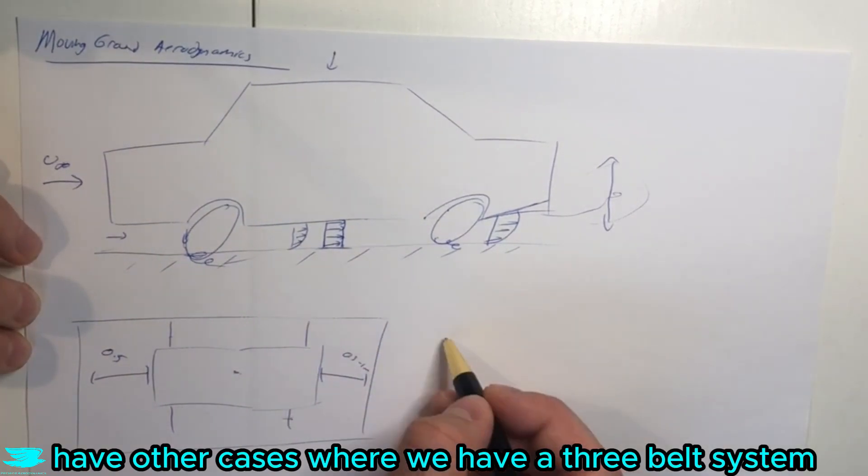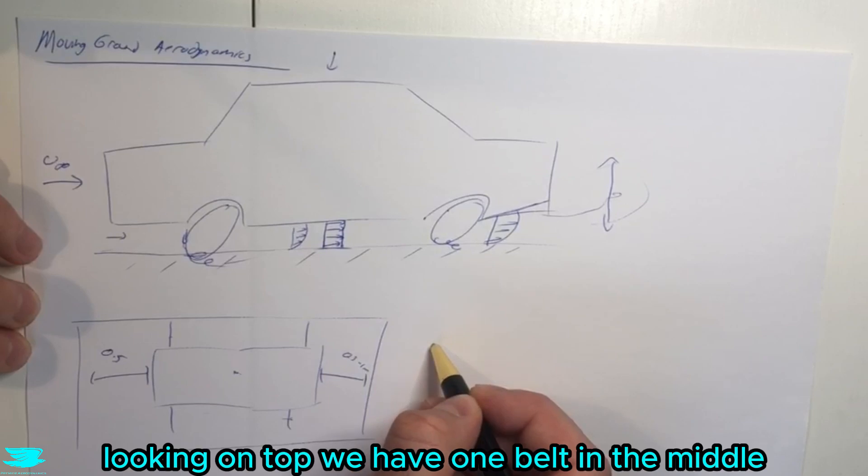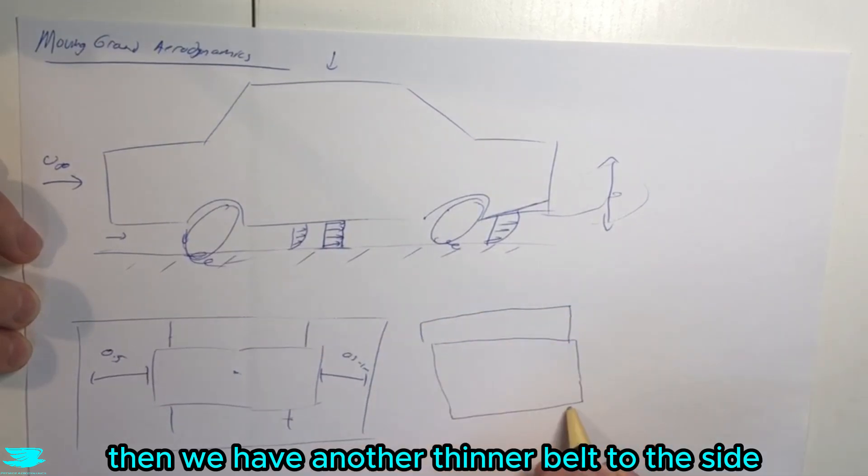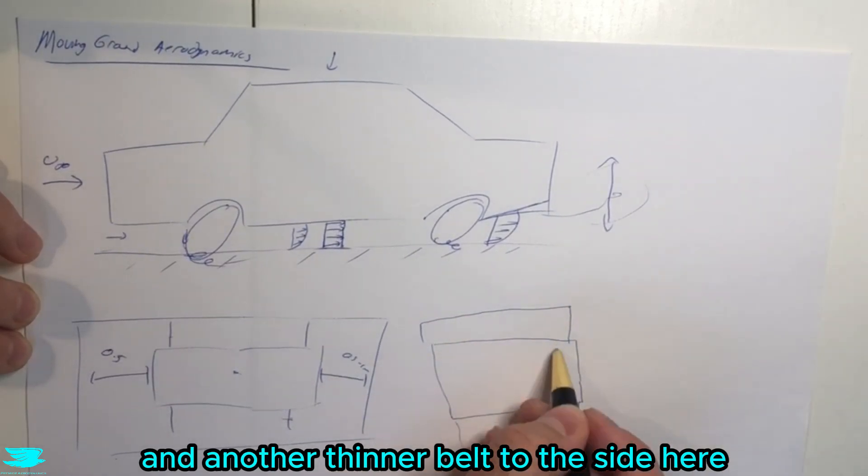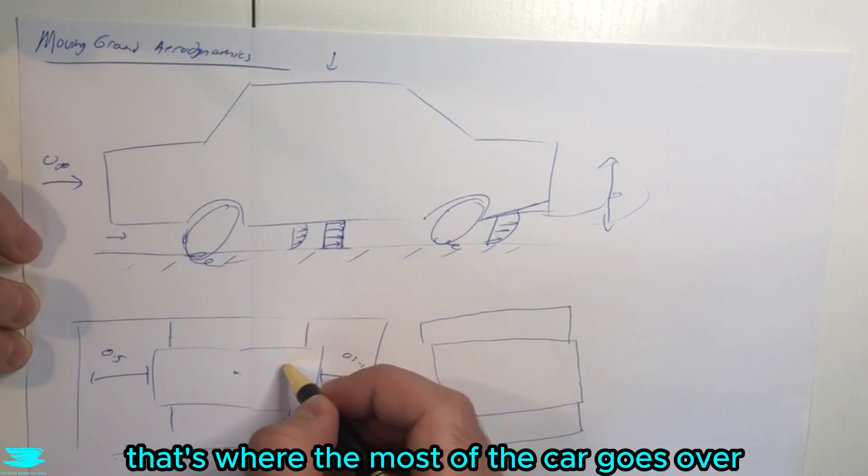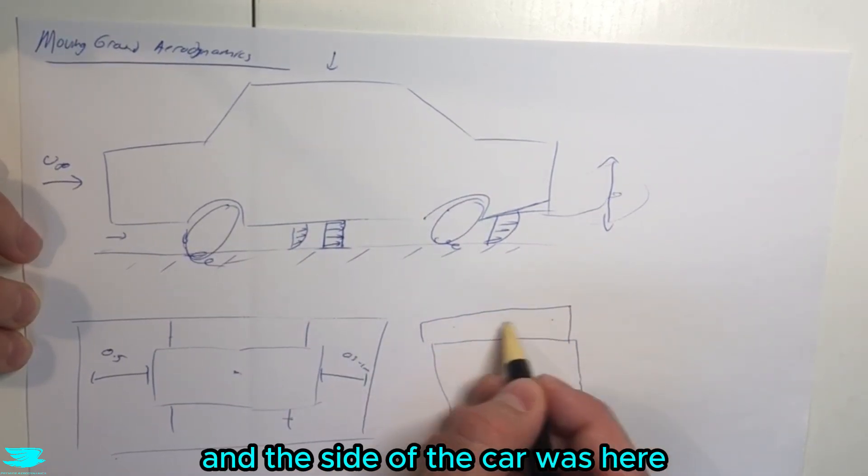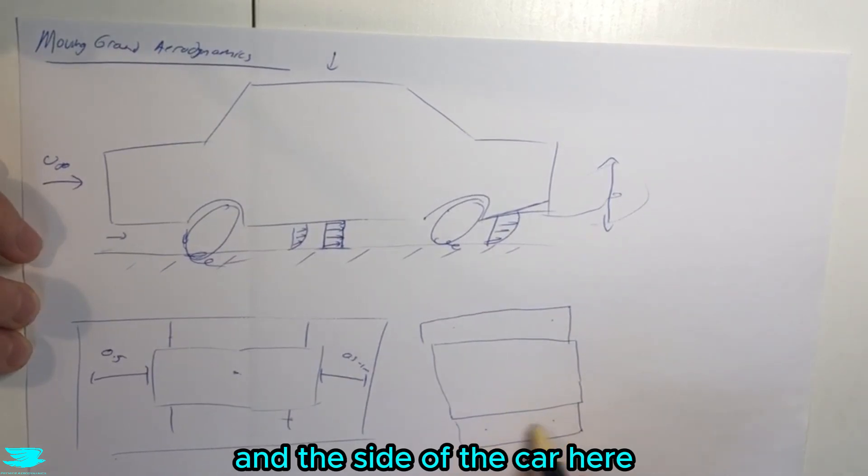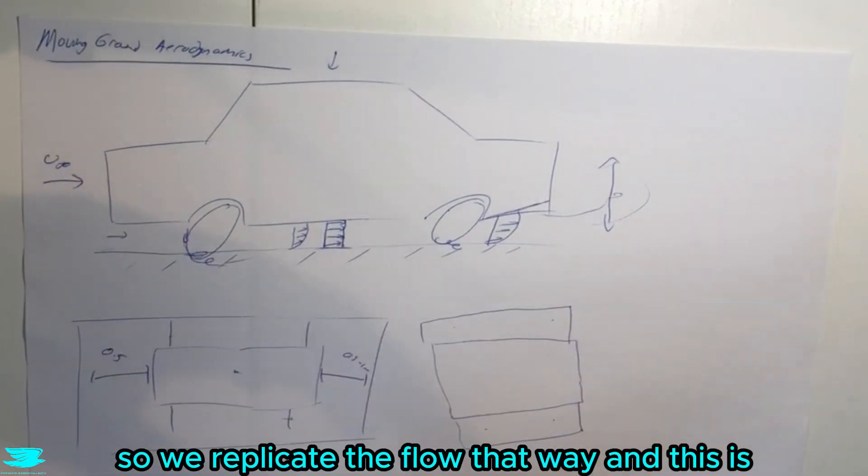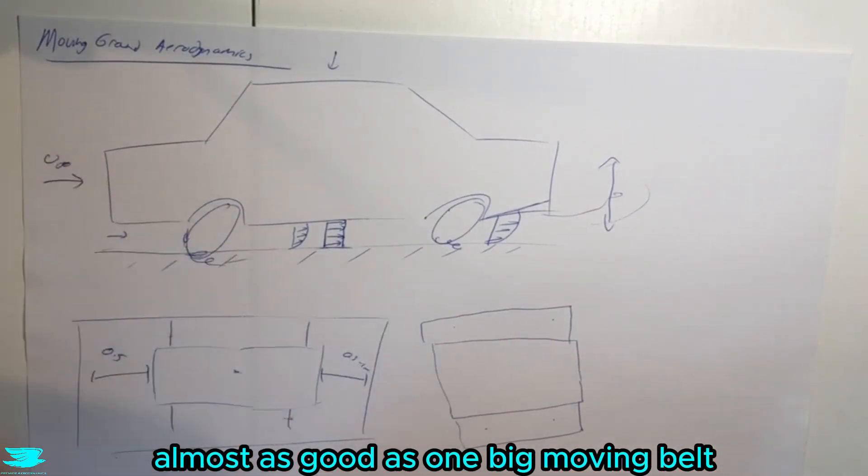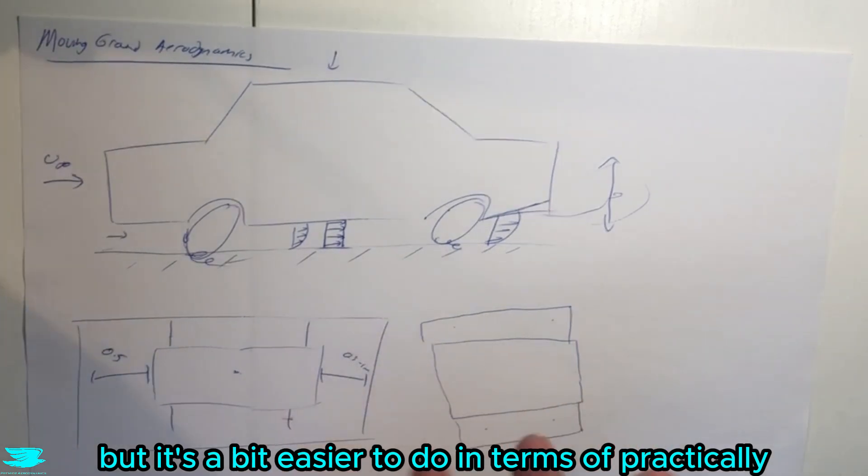Then we have other cases where we have a three-belt system. Looking on top, we have one belt in the middle, then another thinner belt to the side and another thinner belt to the other side. The middle bit is where most of the car goes over, but then the wheels come here and the side of the car is here. This is almost as good as one big moving belt, but it's a bit easier to do practically.